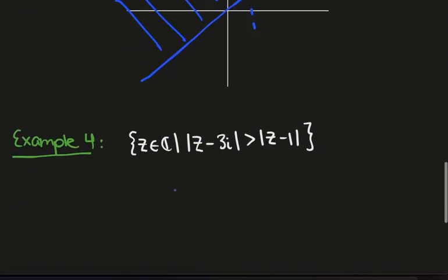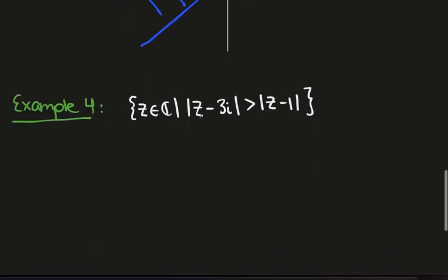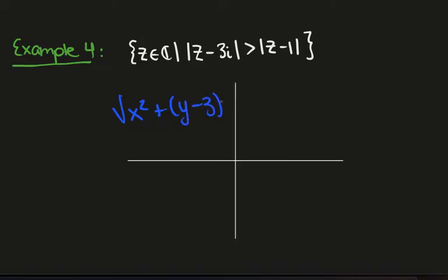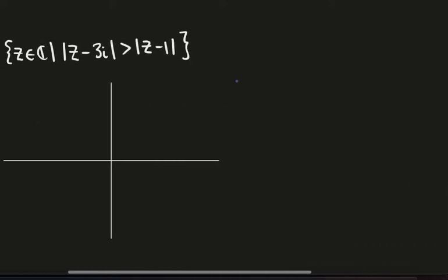Okay, so let's try that again. Let's look at all the complex numbers which are closer to 1 than they are to 3i. So here what we'll do is again look at the boundary. So we'll have the square root of x squared plus (y minus 3) squared. There's a slight complication there. So we have x squared plus (y minus 3) squared, that's this region here.